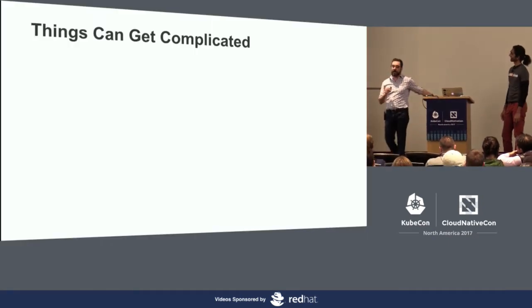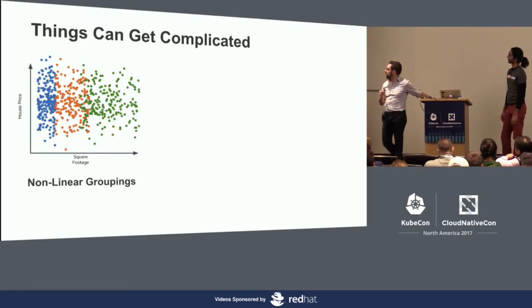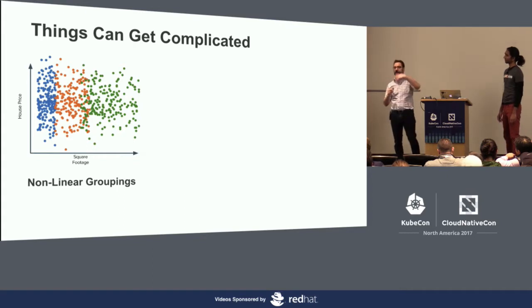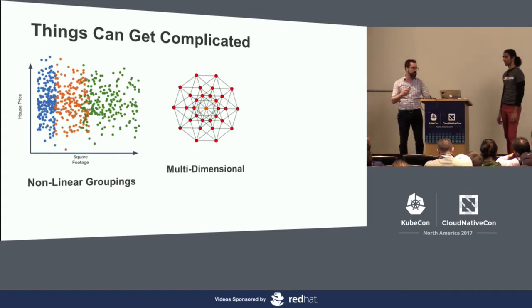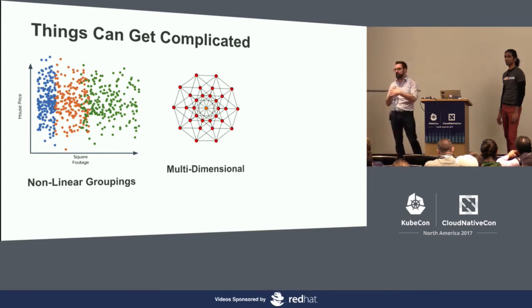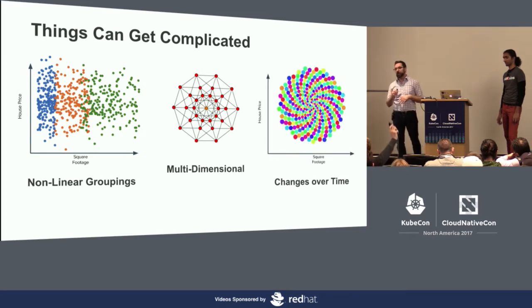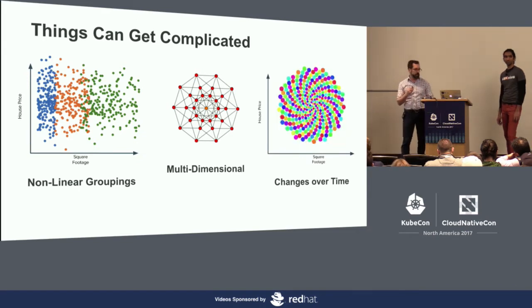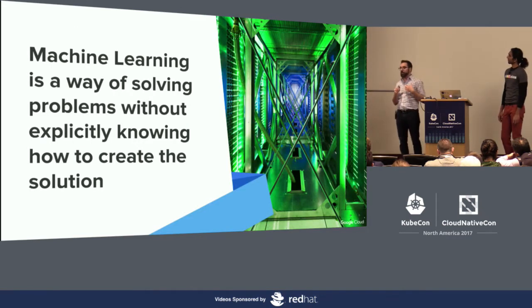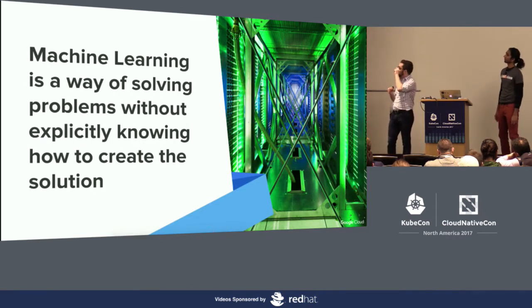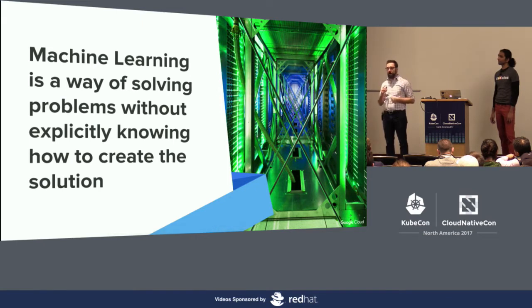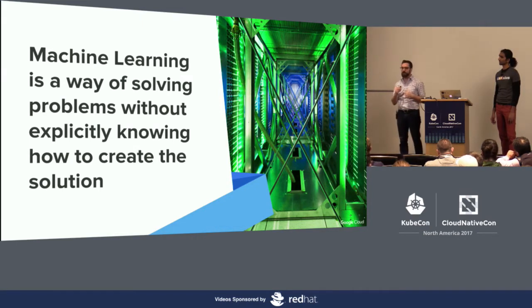But things can get complicated. You can have nonlinear groupings based on neighborhoods, environment, crime rate, and so on. Things can be multidimensional - here I had something incredibly boring, just two features in a linear regression. Or things could change over time. At a high level, what we think machine learning is, is a way to solve problems without explicitly knowing how to create the solution.